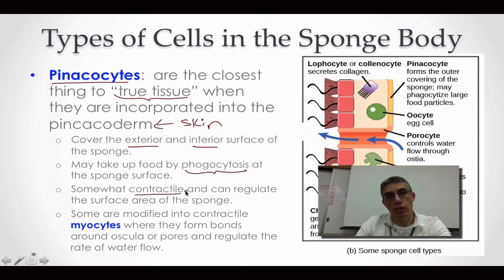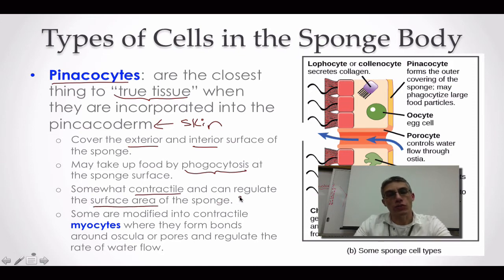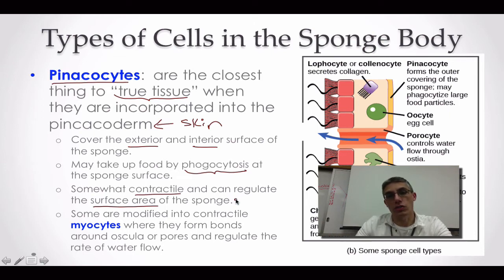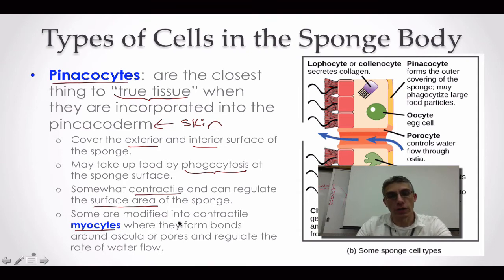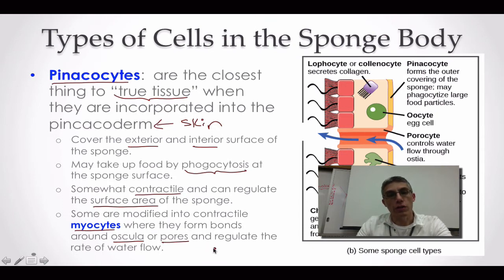Some pinacocytes can actually be contractile, which means they have the ability to contract and could regulate the surface area of the sponge. If you think back to screencast number one, we talked about three different body designs and said that the more surface area you have on the sponge, the larger the sponge could be. Some are going to be modified into contractile myocytes, and they're going to be found very close to the oscula — the large opening towards the top — or next to the dermal ostia, which are the small pores in the sponge, regulating water flow into and out of the sponge.